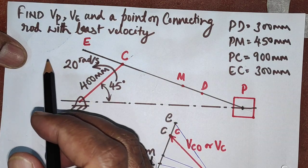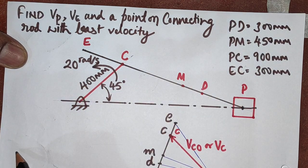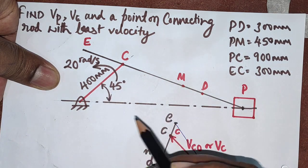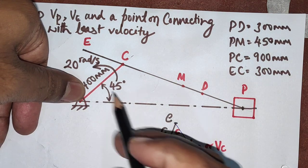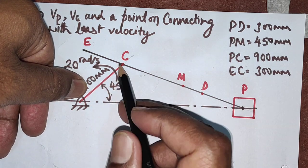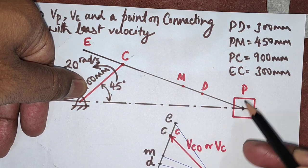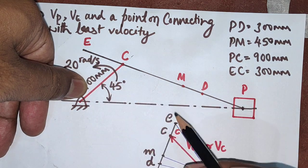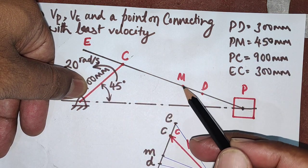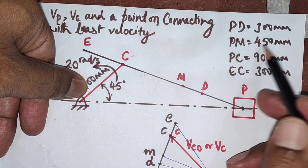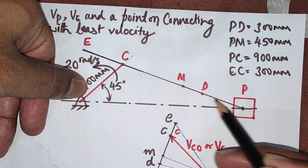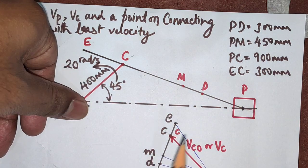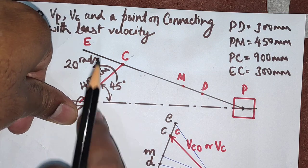We have the slider crank mechanism here. As per the numerical, the crank is at an angle of 45 degrees with respect to the inner dead center and has a length of 400 mm. The length of the connecting rod PC is 900 mm, the connecting rod extends by 300 mm, and there are two more points on the connecting rod — the midpoint PM at 450 mm, and one more point D near the piston. This is basically an IC engine mechanism with a piston, connecting rod, and crank.